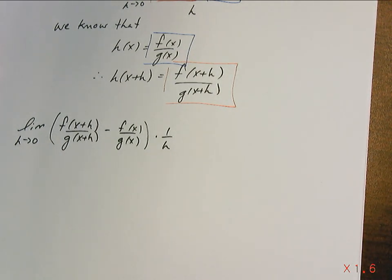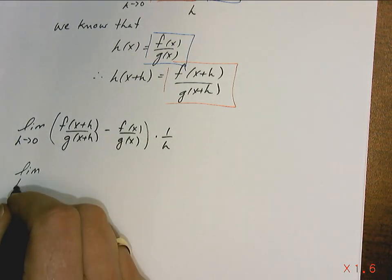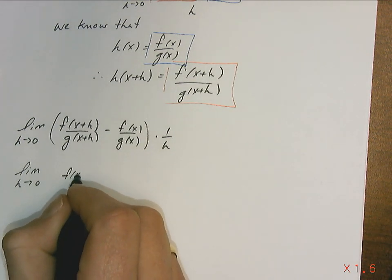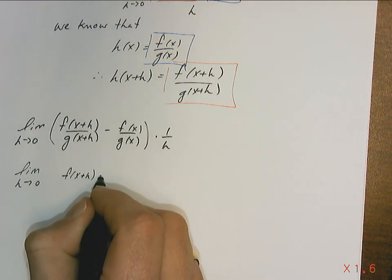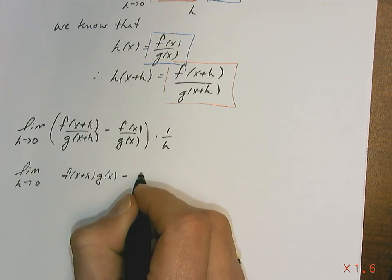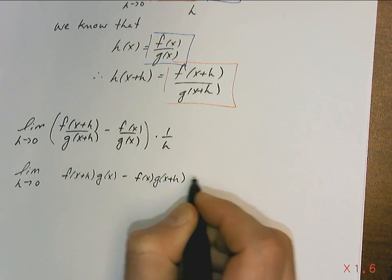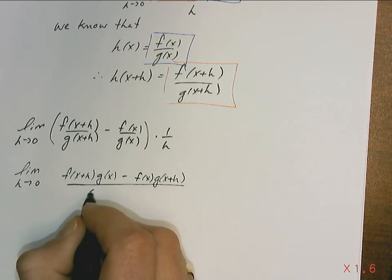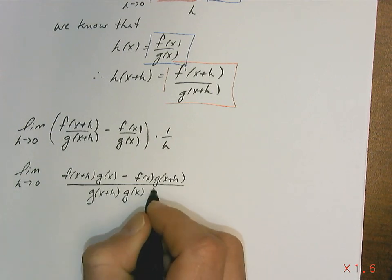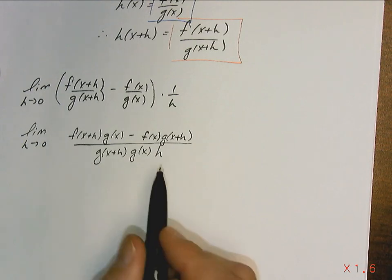I'm going to get a common denominator here to make things look nicer. This gives us f of x plus h times g of x, subtract f of x times g of x plus h, all over g of x plus h times g of x times h.